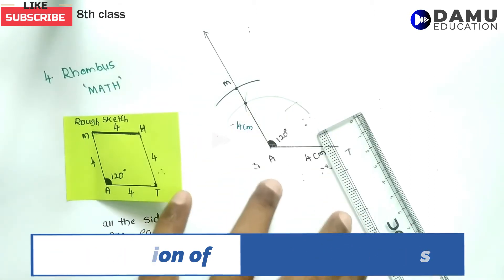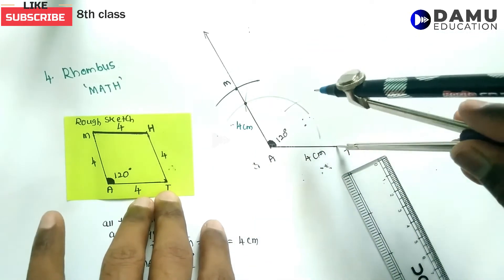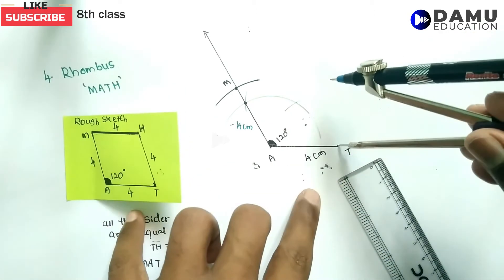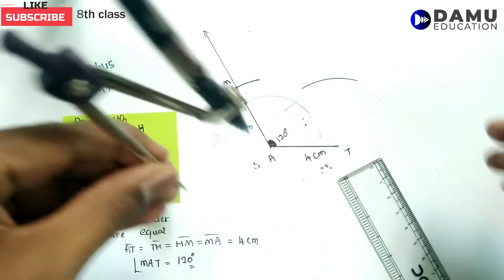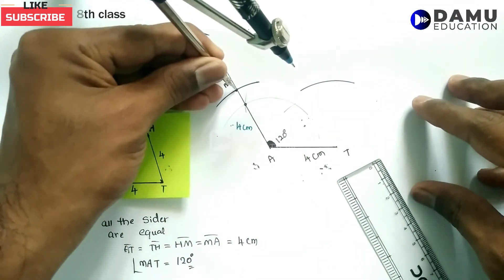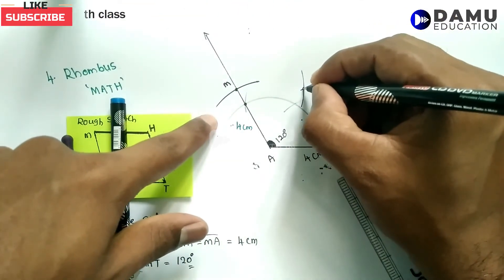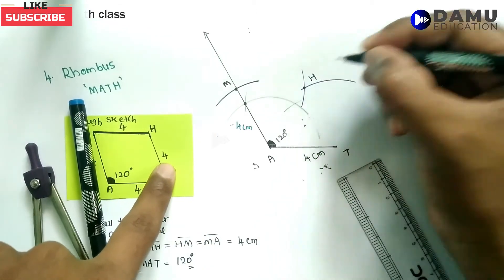Now, from T also draw an arc with 4 cm radius. From M also, draw an arc with 4 cm radius. Where the two arcs intersect, this point is H.